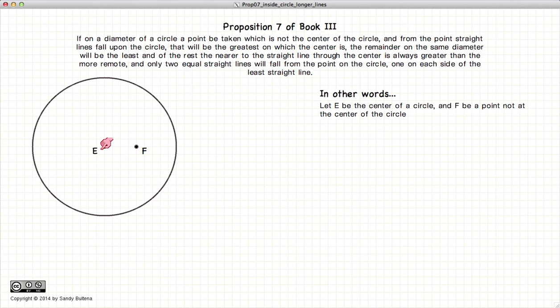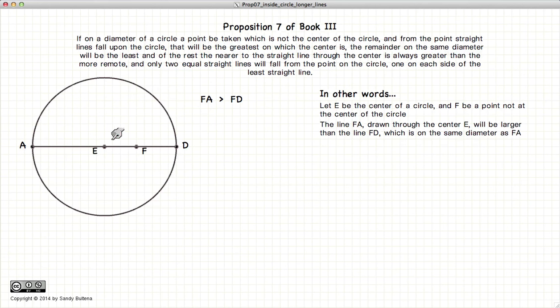we have a circle where E is the center of the circle and F is any point within the circle. Drawing a line from F to E and extend it so it touches the circumference of the circle and we have our line AD.